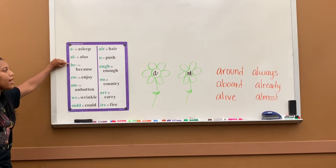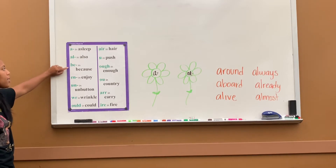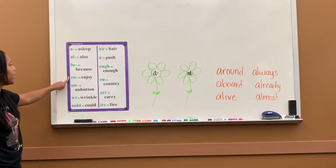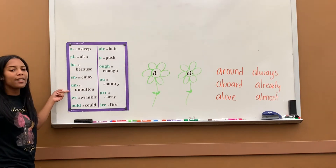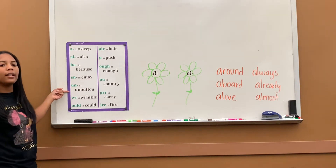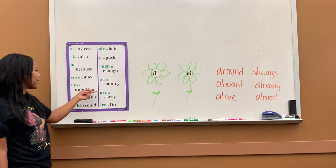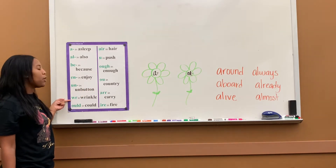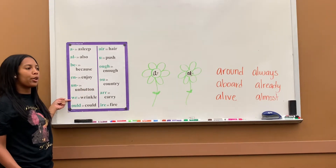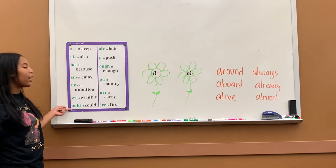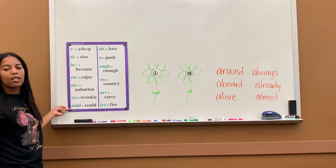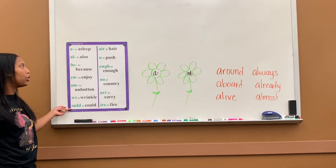BE says b in because. EN says n in enjoy. UN says un in unbutton. WR says rr in wrinkle. OULD says ud in could.